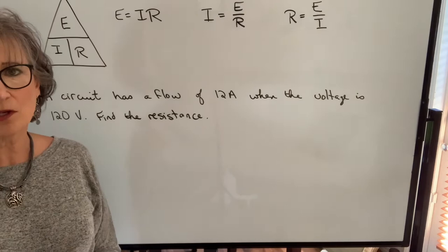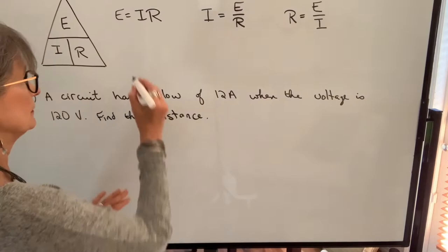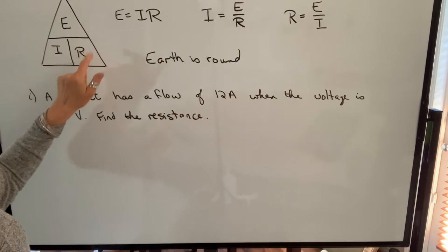One thing that you can do to help you remember that triangle is make up a saying. I'm going to make up the saying Earth is round. Earth is round. Just remember that in your triangle, you're only going to have one variable at the top and two variables at the bottom. So that might help you remember this. And then you can use it to find any one of those variables when you know the other two.